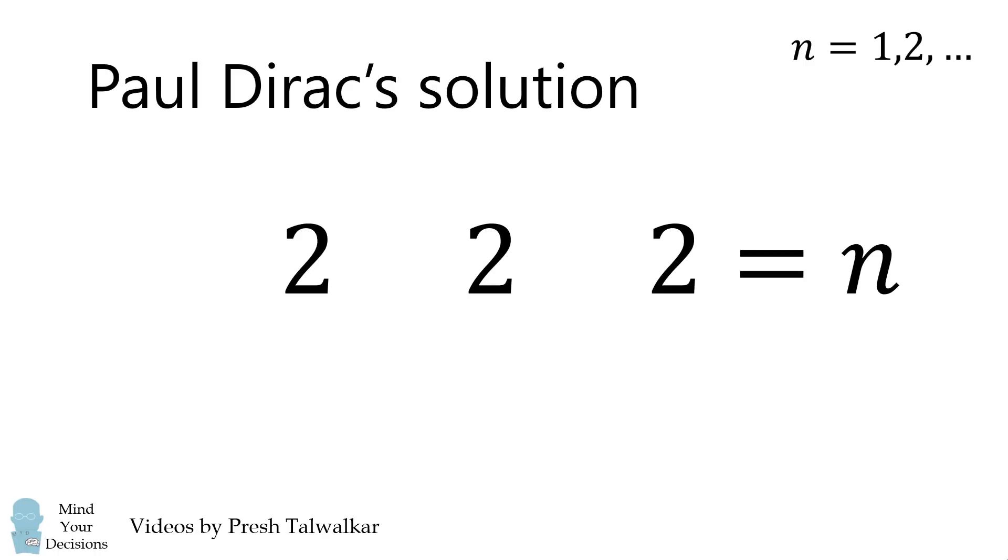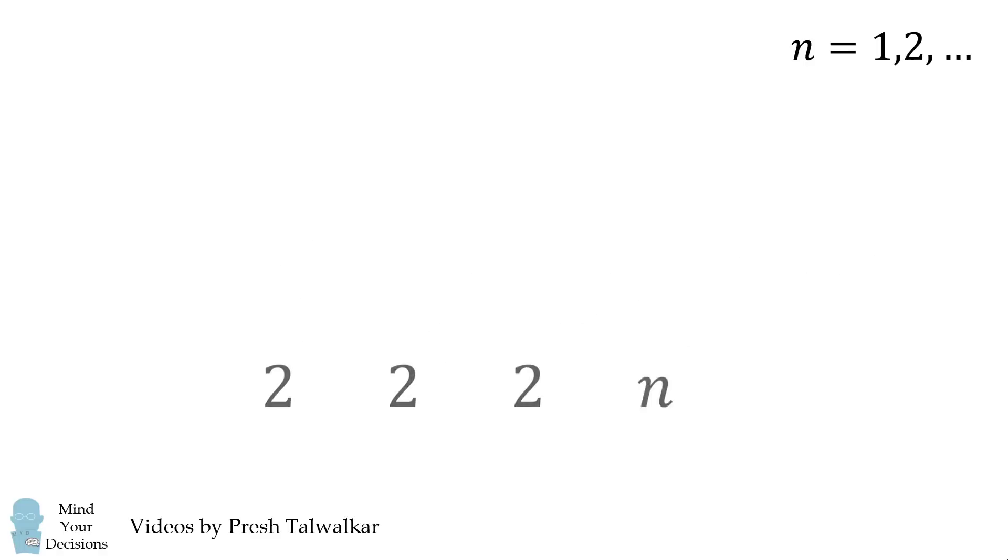How can you make n from three copies of two? There's a clever solution from the Nobel laureate physicist Paul Dirac. Here was his formula.